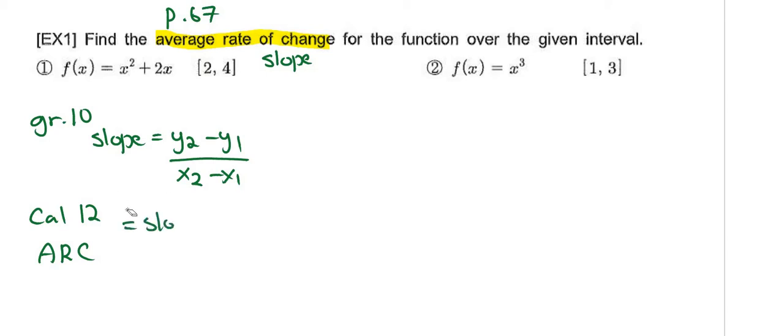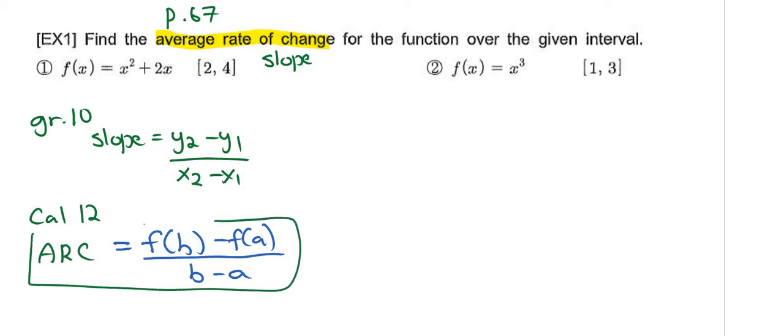Average rate of change, instead of writing y2 minus y1 over x2 minus x1, uses different notation: f of b minus f of a all divided by b minus a. For the questions in this section, we're basically just finding the slope when we're being asked to find the average rate of change.